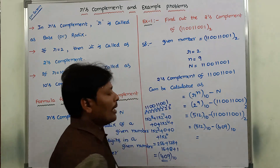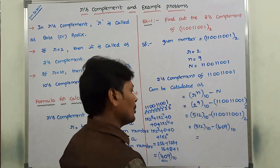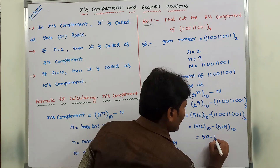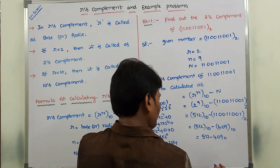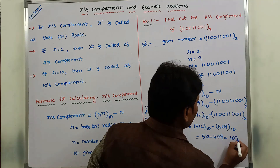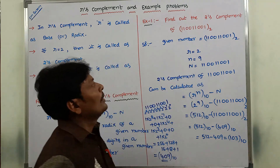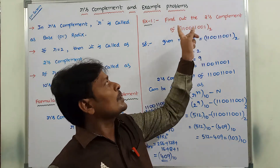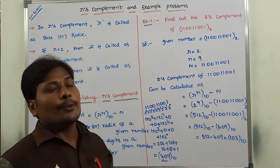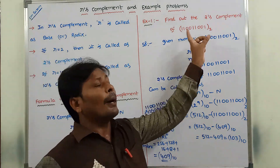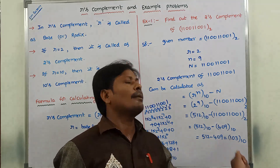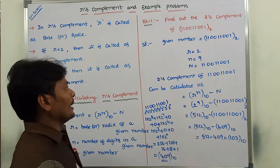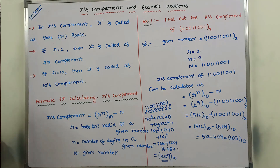Now we have 512 base 10 minus 409 base 10 — both are base 10, so we can perform the subtraction operation. 512 minus 409 equals 103 base 10. The problem asks us to find the 2's complement of the given binary number, so the answer should also be a binary number. But we are getting a decimal number, so we need to convert this decimal number back to binary.